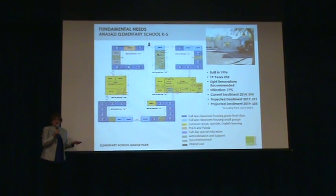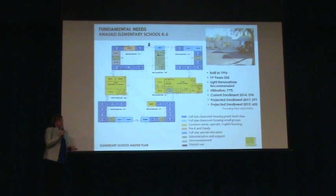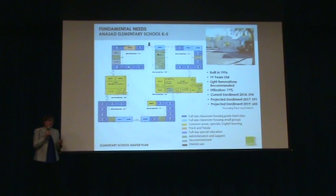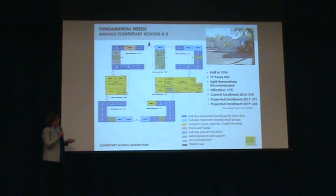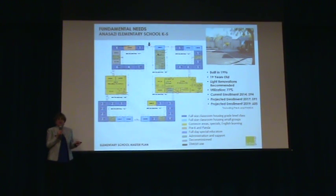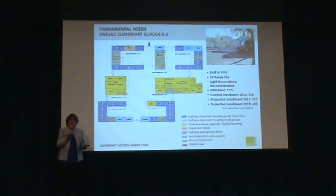In general, utilization of 75% or above for an elementary school is considered good. The current enrollment at Anasazi as of November 2014, including pre-K and PANDA, is 594 students. There was a difference in numbers because some reports did not include pre-K and PANDA. All numbers you see on current enrollment will be as of November 2014 and do include pre-K and PANDA, because they are utilizing those classrooms.